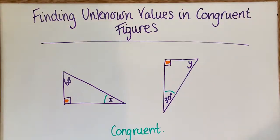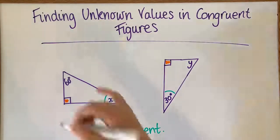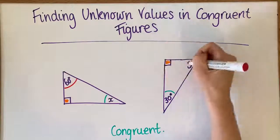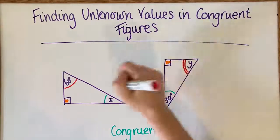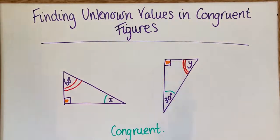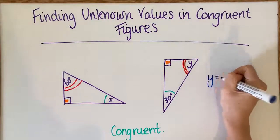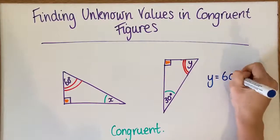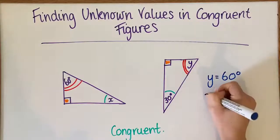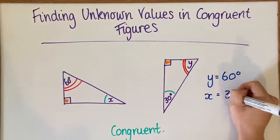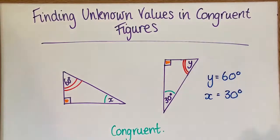And then that means that this leftover angle here pairs with this angle here. Now I'm going to do a double line to signify that. OK, so therefore what we can say is that Y is equal to 60 degrees and X is equal to 30 degrees because we know that they are congruent shapes.